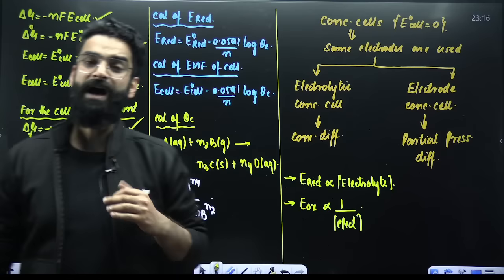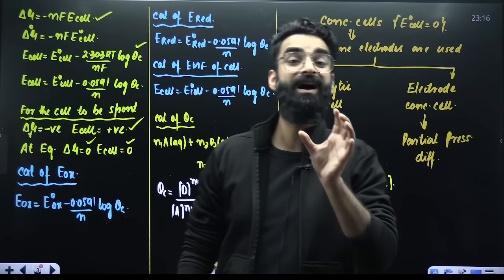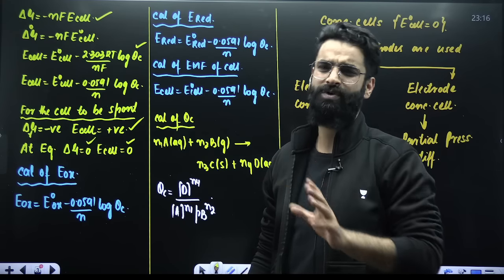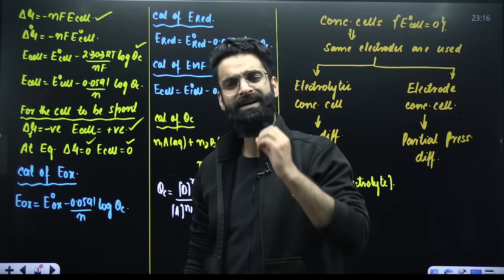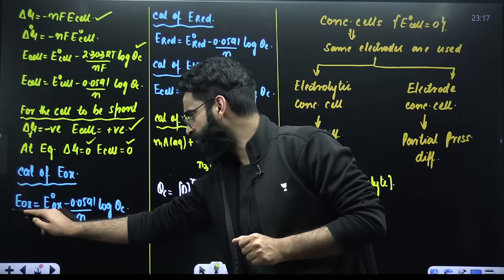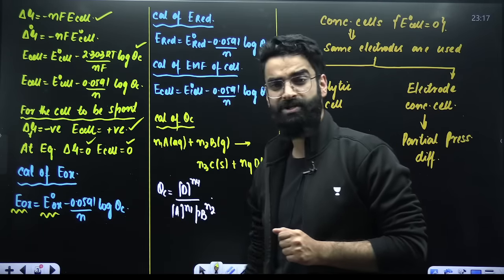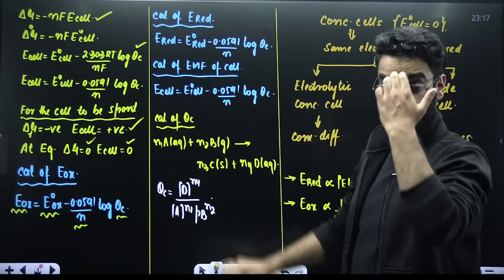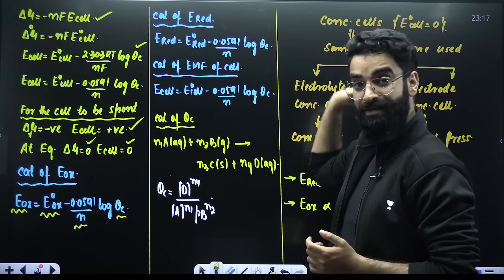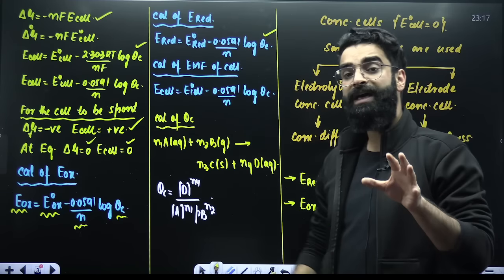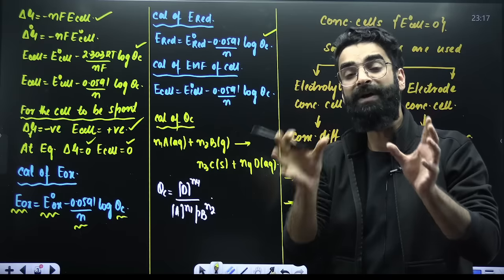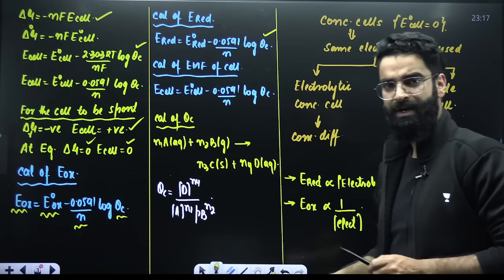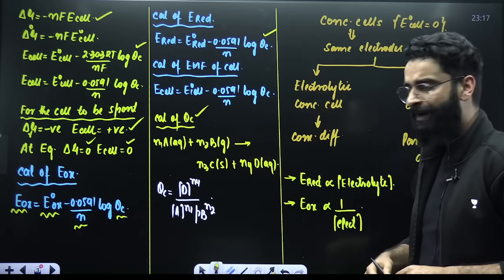To calculate the oxidation or reduction potential of half-cells under non-standard conditions, we use the Nernst equation: oxidation potential of the half-cell = E°_ox − (0.0591/n) × log(Q_C). Similarly, E_red = E°_red − (0.0591/n) × log(Q_C). For a complete galvanic cell under non-standard conditions: E_cell = E°cell − (0.0591/n) × log(Q_C).